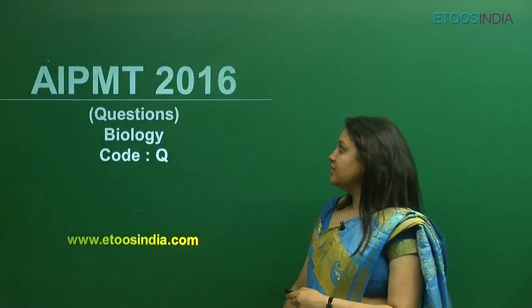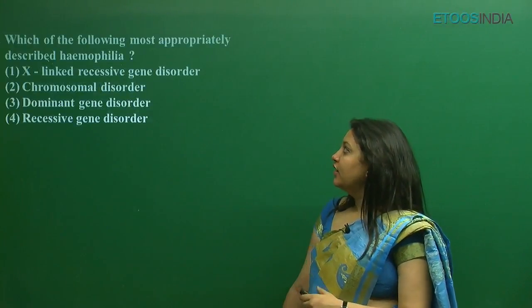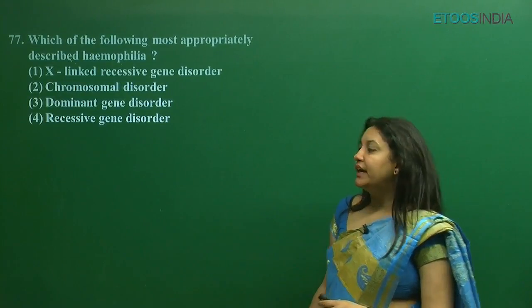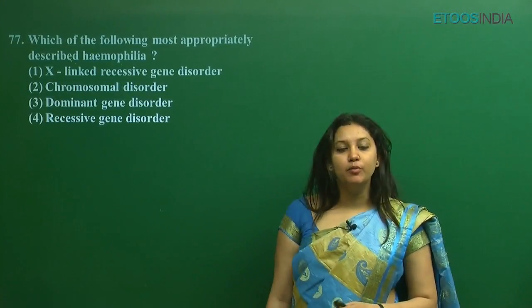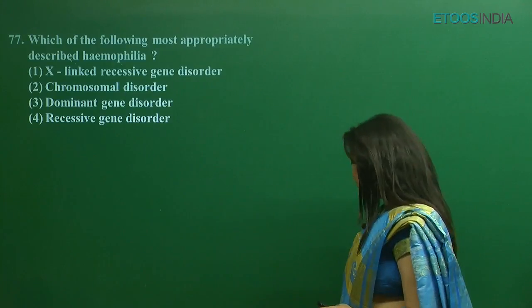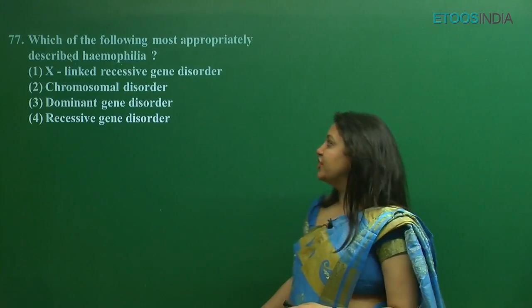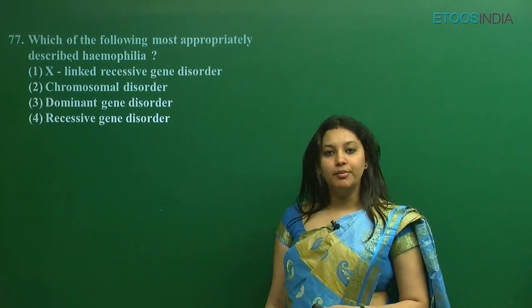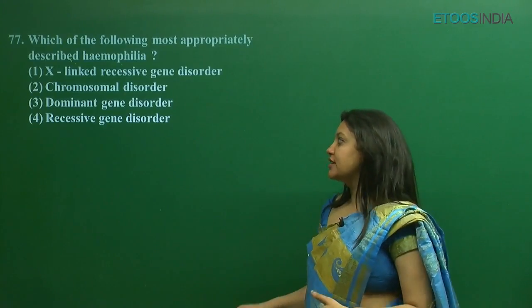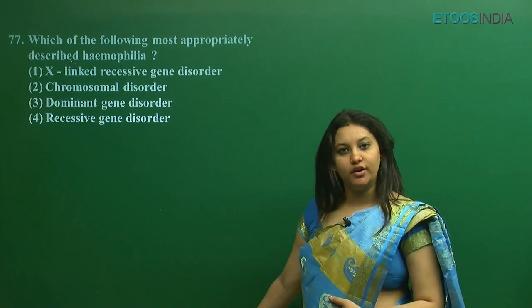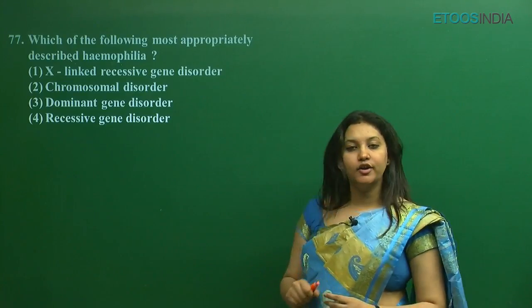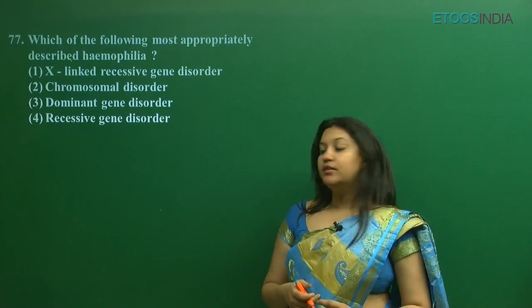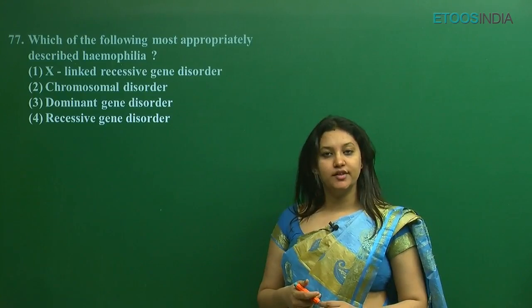The next question is: which of the following is most appropriately described as haemophilia? The options are: X-linked recessive gene disorder, chromosomal disorder, dominant gene disorder, or recessive gene disorder. The first is the correct option regarding this question — that is, X-linked recessive gene disorder.